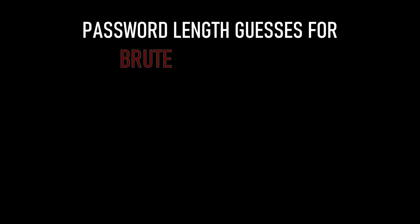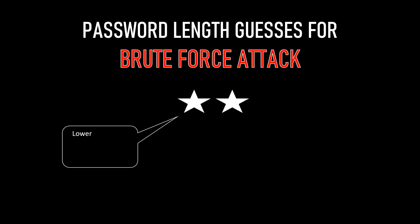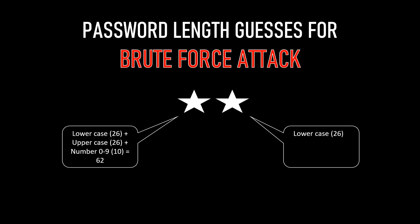What are the password length guesses required for a brute force attack? Let's take an example. Suppose a password is two characters long — how many guesses are required to crack it? For a two-character password, a maximum of 3,844 guesses or permutations are needed. For the first character, there can be 62 combinations: 26 lowercase letters, 26 uppercase letters, and 10 numbers. The second character also has 62 combinations, giving a total of 62 × 62 = 3,844 permutations.